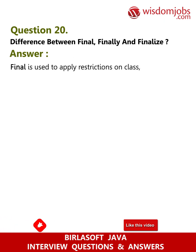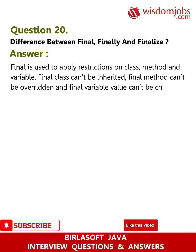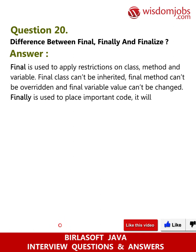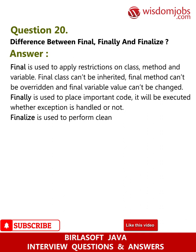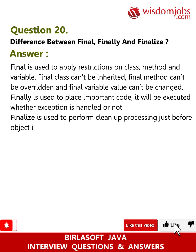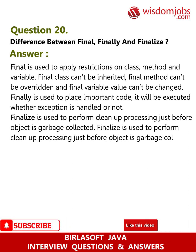Question 20: What is the difference between final, finally, and finalize? Answer: final is used to apply restrictions on class, method, and variable — a final class can't be inherited, a final method can't be overridden, and a final variable's value can't be changed. finally is used to place important code that will execute whether an exception is handled or not. finalize is used to perform cleanup processing just before an object is garbage collected.